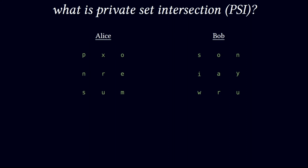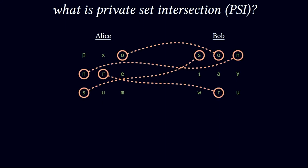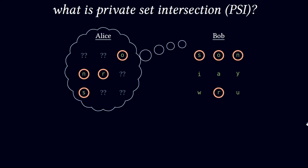Let's begin by looking at the traditional private set intersection problem. There are two parties Alice and Bob and they both have a set of discrete points, and they are interested in learning the set of points that are common to both their sets. However, there is an additional privacy constraint which states that both parties should learn nothing but just the intersection.